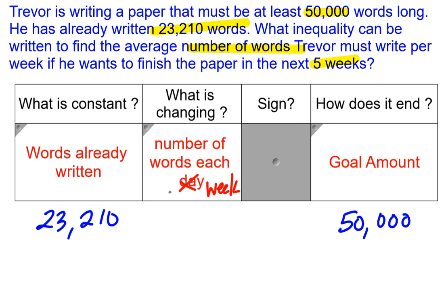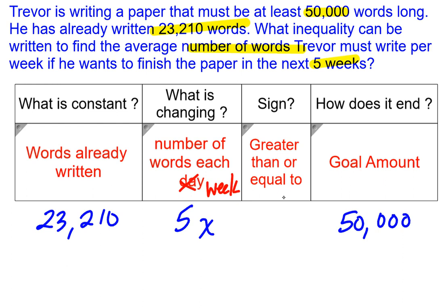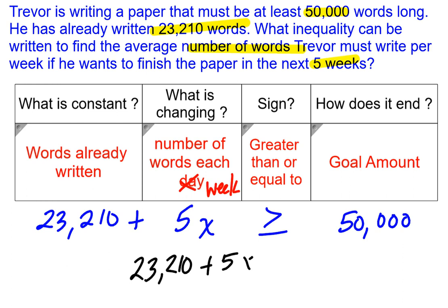We know there are five weeks and x words per week. We want him to reach his goal, so we use greater than or equal to — he must write at least 50,000 but can write more. Cleaning it up: 23,210 plus 5x is greater than or equal to 50,000.